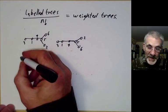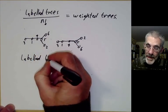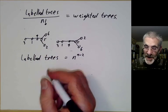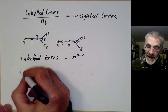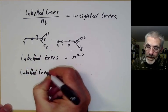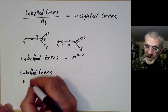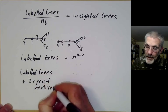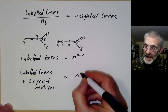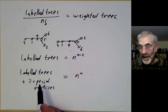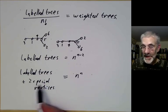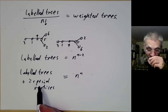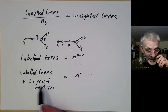So what we want to do is show the number of labeled trees is equal to n to the n minus 2. Now I'm going to change this slightly and look at labeled trees plus two special vertices. The number of these should be n to the power of n because picking one vertex there are n choices, and picking a second vertex there are also n choices. Notice that the two special vertices might actually be the same vertex.